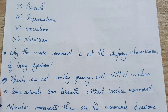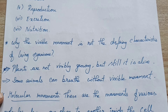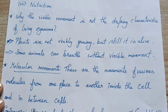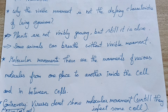Most things we can see, but some movements are not visible to our naked eyes. That movement is called molecular movement — the movement of various molecules from one place to another inside the cell and in between the cells. We are not even able to see the cell with the naked eye, so we certainly cannot see the movement of molecules inside it. This movement of molecules from one place to another inside and between cells is called molecular movement.